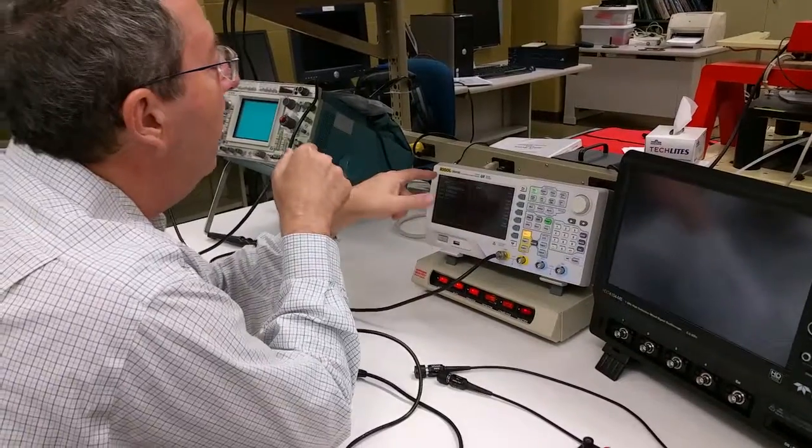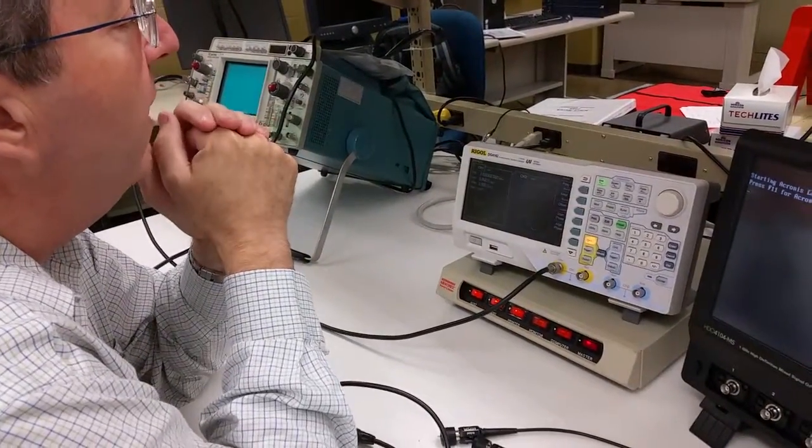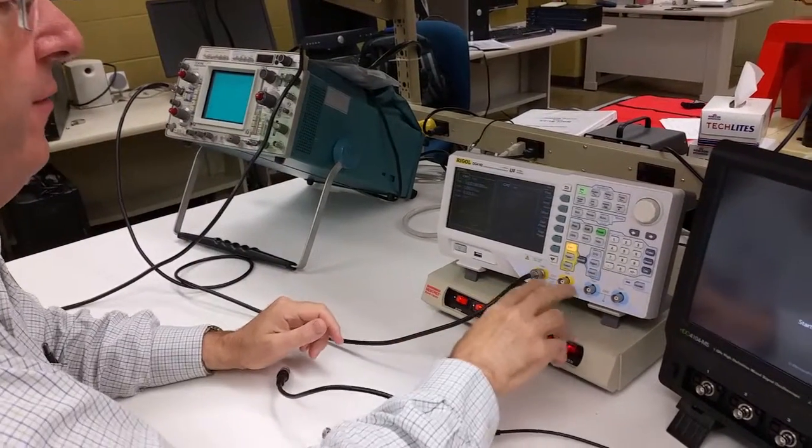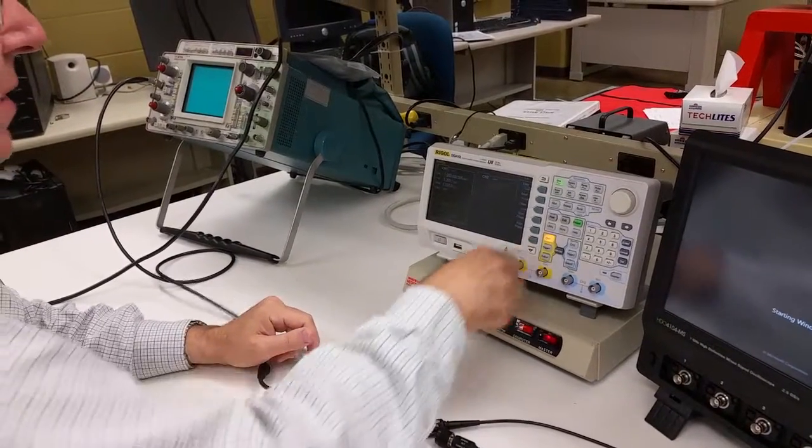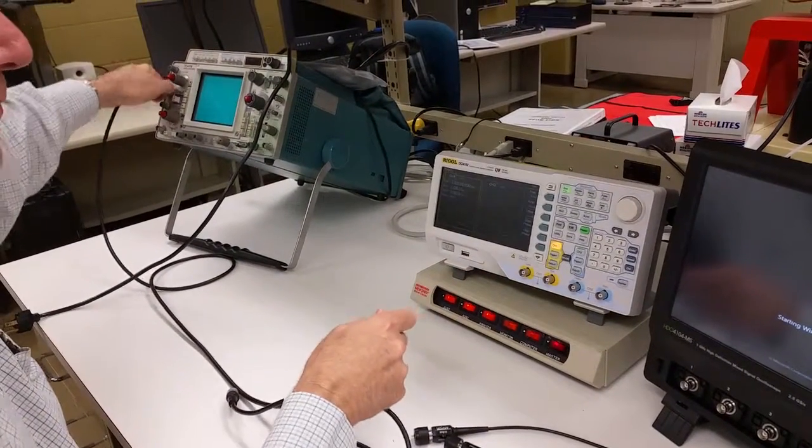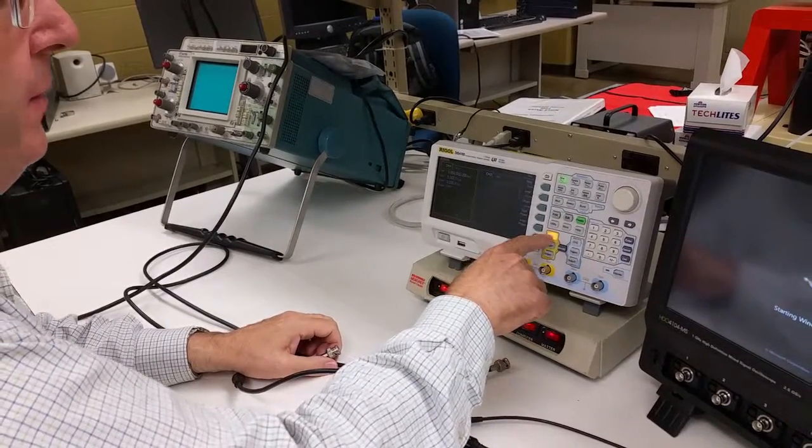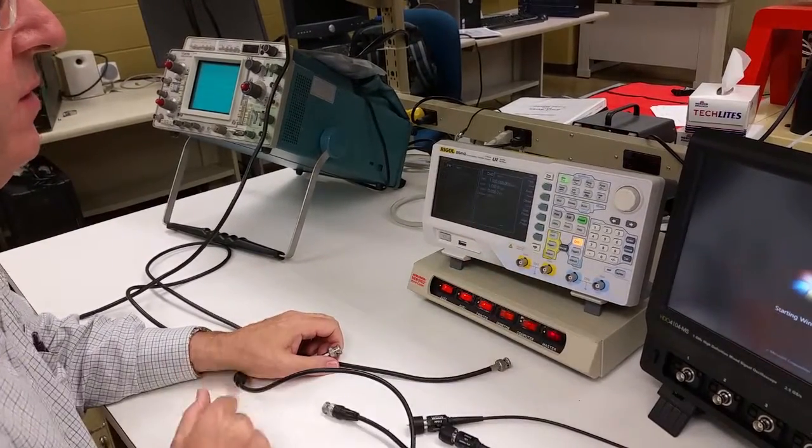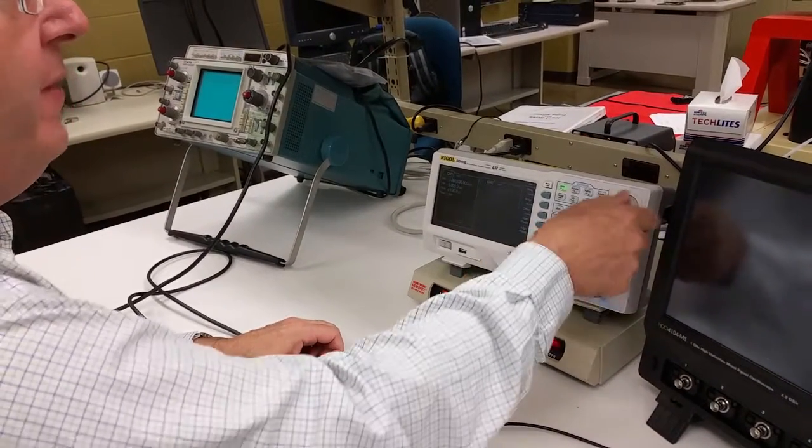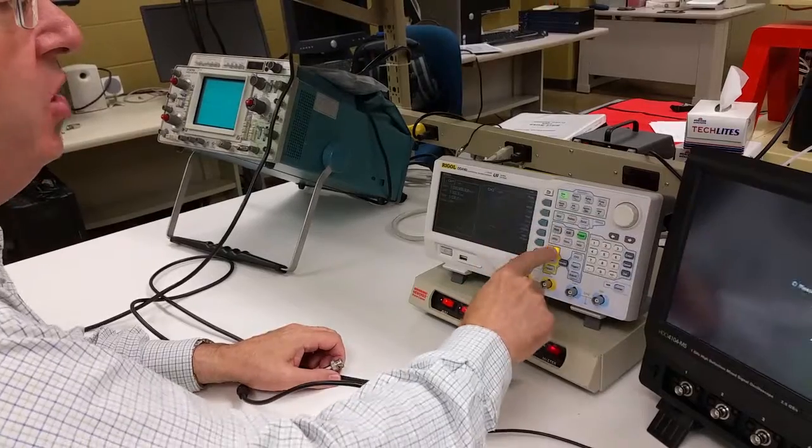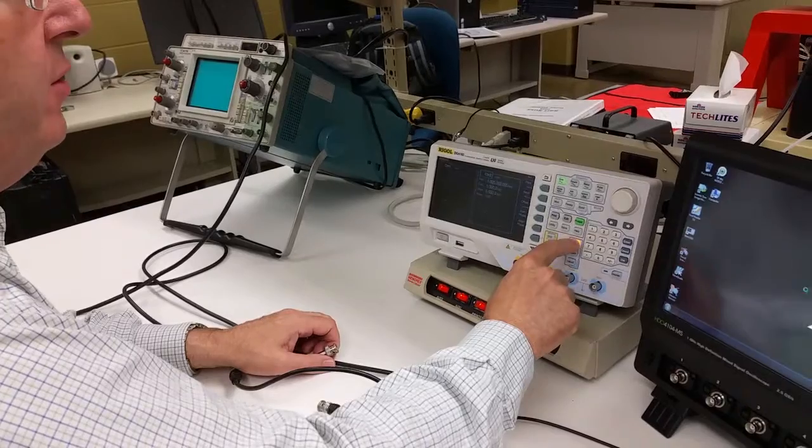This is a two-channel arbitrary waveform generator or function generator and there are four BNC connectors across the front. There's one that says output channel 1 and another one that's output channel 2. There's a button here that's lit that says channel 1 and a button here that's lit that says channel 2. These top buttons are lit when the control knob is changing values for channel 1 or we're changing values for channel 2.